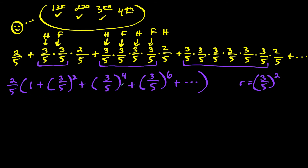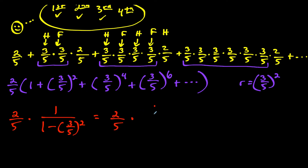Now we just need to know how to evaluate an infinite geometric series. The two-fifths stays on the outside. The formula for the infinite geometric series on the inside is the first term divided by one minus the r value, which is three-fifths squared. So we have two-fifths times one over one minus nine over twenty-five. One minus nine over twenty-five equals twenty-five over twenty-five minus nine over twenty-five, which gives us sixteen over twenty-five.